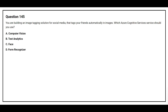Question number 145. You are building an image tagging solution for social media that tags your friends automatically in images. Which Azure Cognitive Services service should they use? Option A: Computer vision. Option B: Text analytics. Option C: Face. Option D: Form recognizer. The correct answer is Option C, Face.